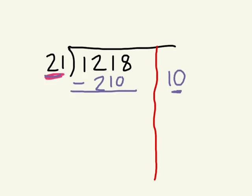Now we're going to take that number and we're going to subtract it. So 8 take away 0? 8. Good. 1 take away 1? 0. 2 take away 2? 0. 1 take away nothing? 1. Good.